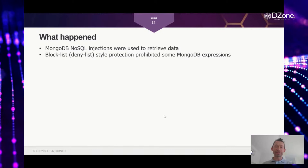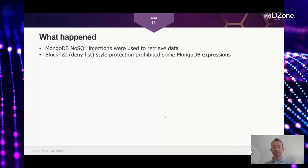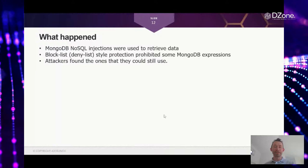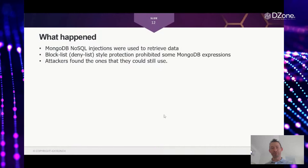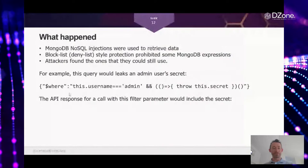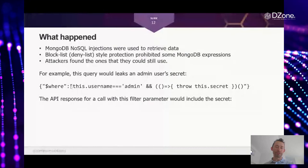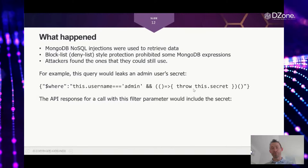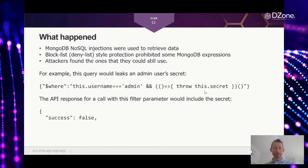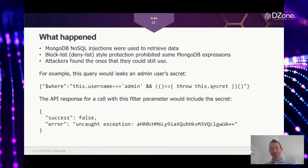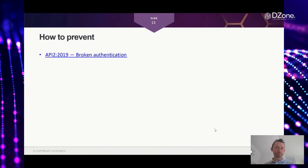Researchers found that in the parameters of API calls they could supply NoSQL injections instead of the regular strings the API expected. The application did have some protection and was checking that certain expressions were not used — but MongoDB has a very powerful query language, so researchers found expressions that weren't blocked. For example, a 'where' clause expression that was not blacklisted could be supplied to trigger an uncaught exception that leaked the user's secret in the error output.